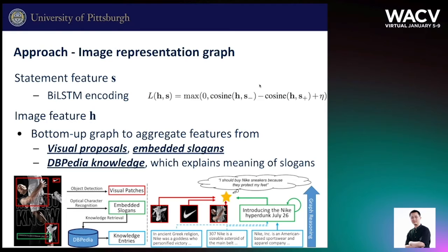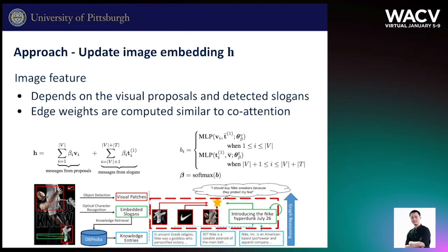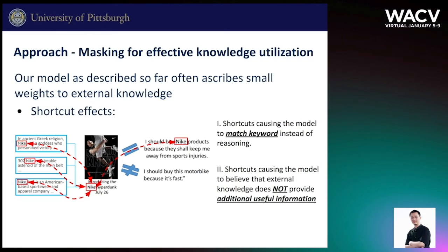The features of visual proposals, embedded slogans, and DBpedia knowledge are propagated from bottom to top. First, knowledge node representations are aggregated in the slogan nodes. We use a node feature vector multiplied by the edge weight to account for the knowledge contribution. The edge weights are dynamically adjusted depending on the knowledge-slogan and the knowledge-visual relevance. Then, the updated slogan features and the visual proposal features aggregate into the final image representation. The edge weights are designed to be analogous to co-attention, where visual relevance depends on text, while text slogan relevance depends on visual features.